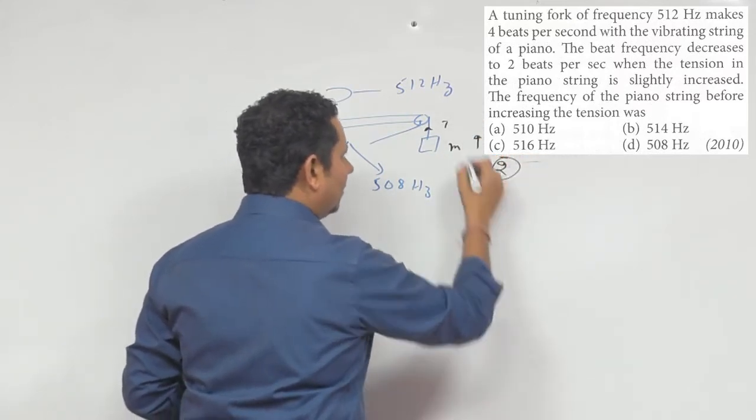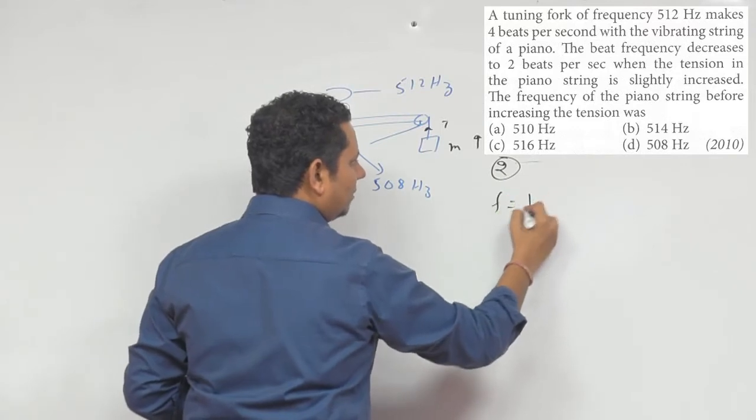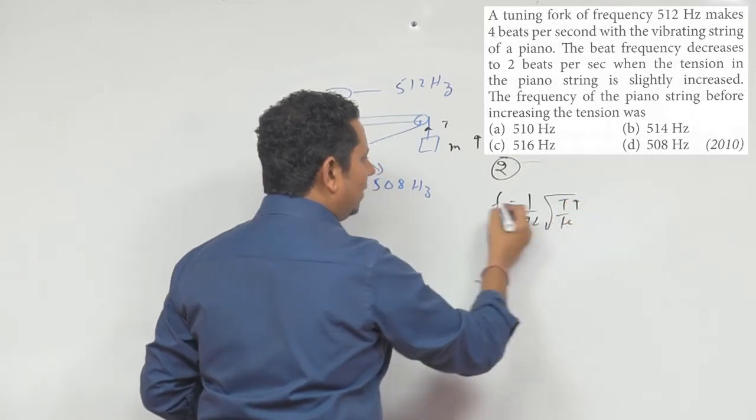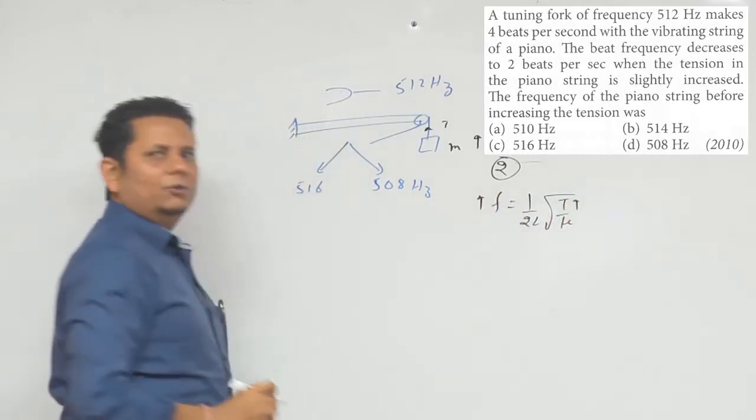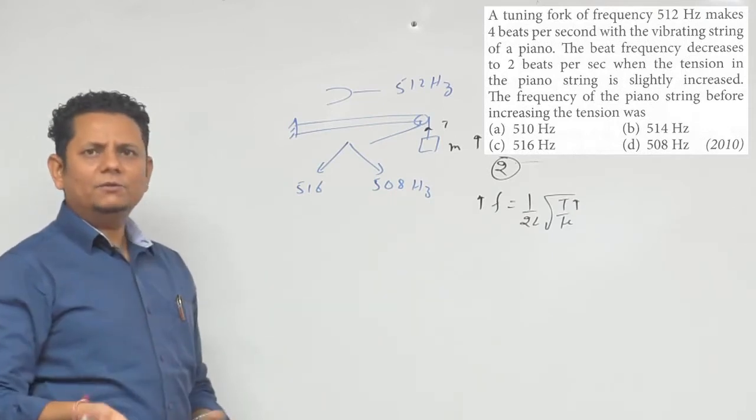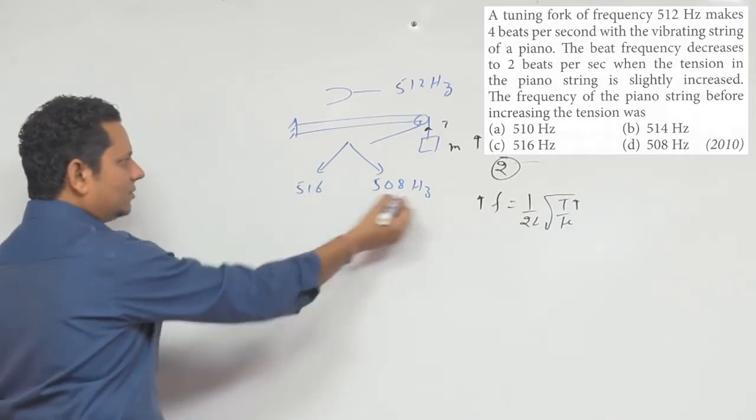This is a frequency. It is 1 by 2L times the square root of T by μ. So in this case, the frequency depends on tension. When tension increases, the frequency increases.